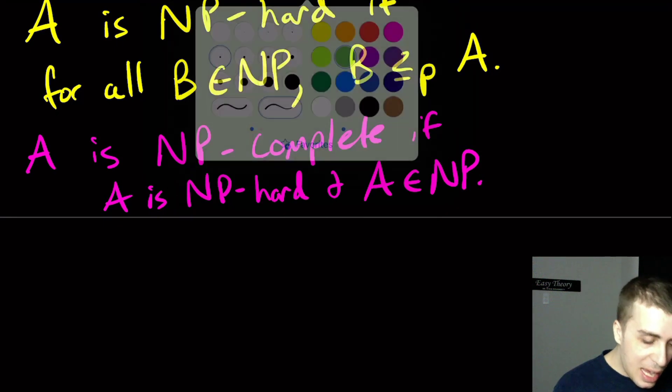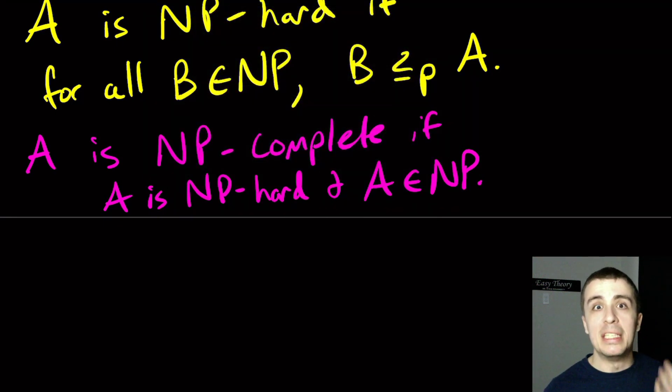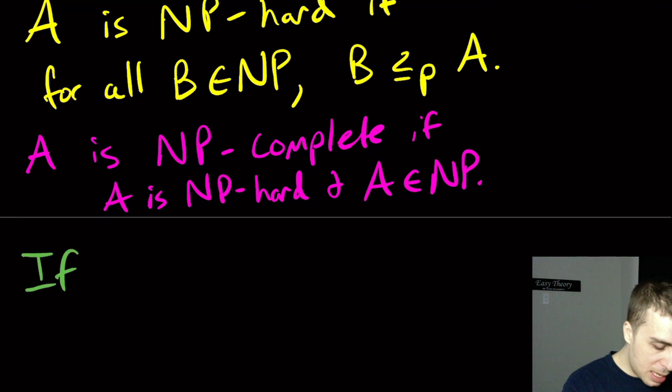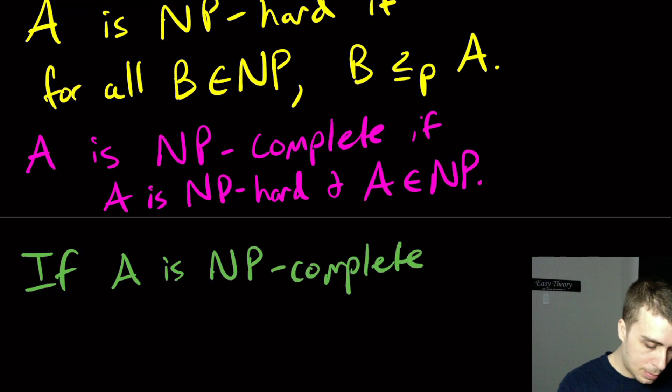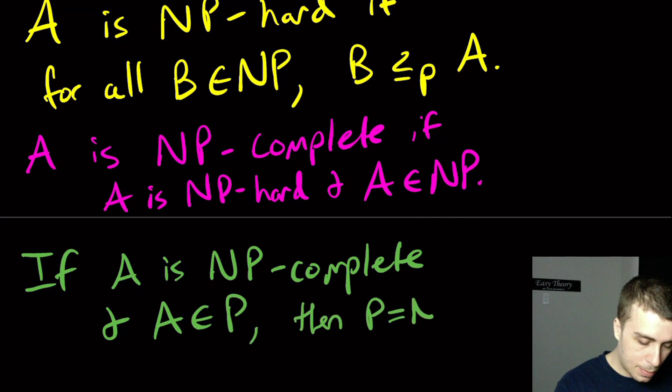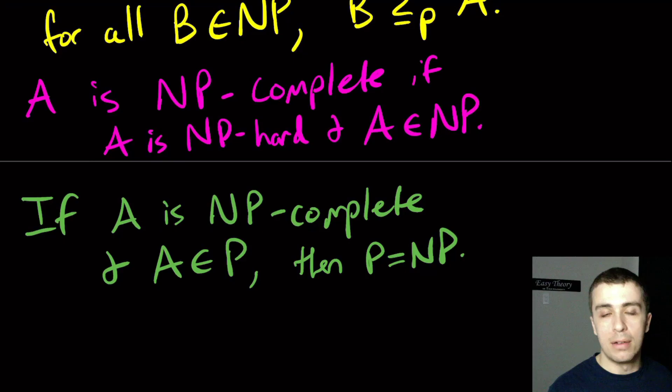Because one thing that we can find out is if any NP-complete problem is in P, then P equals NP. So if A is NP-complete and A is in P, then P equals NP.